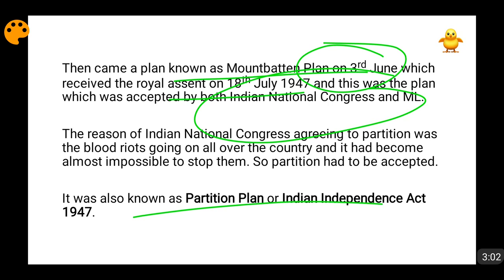The question arises: why did the leaders of the Indian National Congress agree to dividing India? This was the biggest question. The biggest reason was that there were bloody riots going on all over the country, and it had become impossible to stop them. People were thirsty for each other's blood on the basis of religion. Hindus and Sikhs formed one side, Muslims formed the other side, and they were literally cutting each other to pieces.